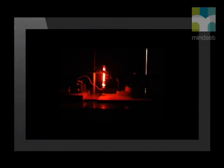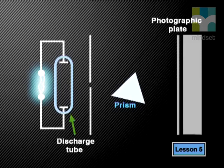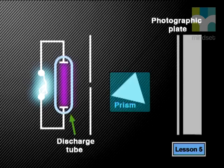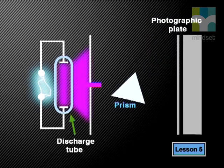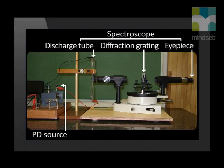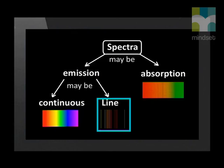We put our mystery gas into the glass tube, connect the wires, switch off the light, and look through the eyepiece. The gas glows because of the potential difference across it. In this representation the spectroscope has a prism rather than a diffraction grating, and a photographic plate rather than an eyepiece. As the light passes through the prism it is diffracted to form lines of color rather than a continuous band. Looking through the eyepiece, we see dark and bright lines — this is called a line emission spectrum.